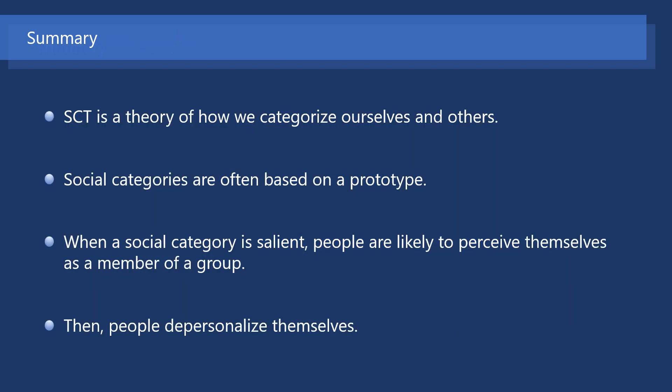The self-categorization theory is a theory of how we categorize ourselves and others. Social categories are often based on a prototype — a fuzzy set of attributes that characterize and distinguish a group from other groups. When a social category is salient, people are likely to perceive themselves as a member of a certain group rather than as a unique individual, and then people depersonalize themselves — that is, they define themselves by the features of a specific group. Thank you for listening.